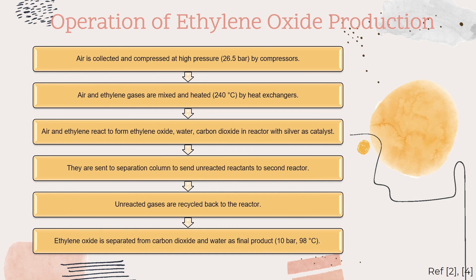Lastly, ethylene oxide is separated from carbon dioxide and water as the final product at 10 bar and 98 degrees Celsius.